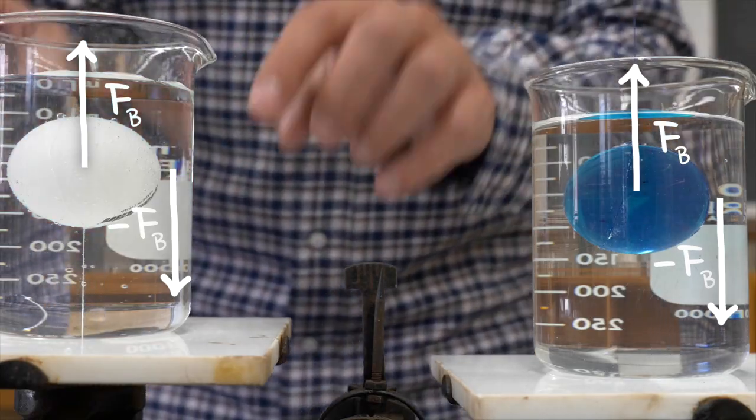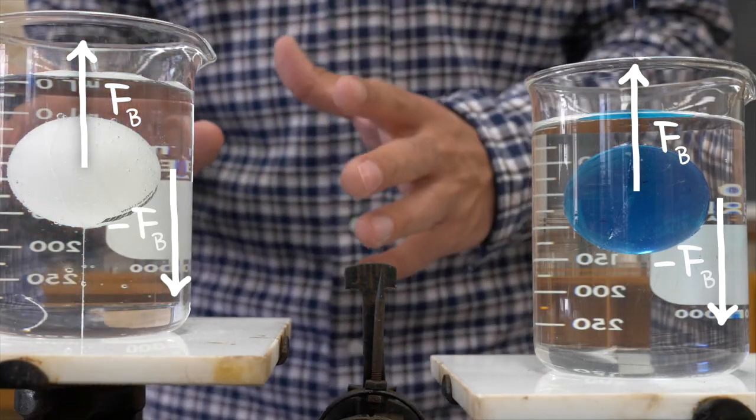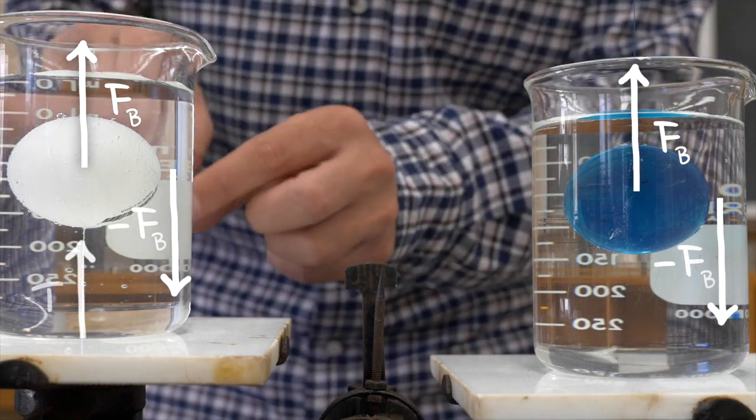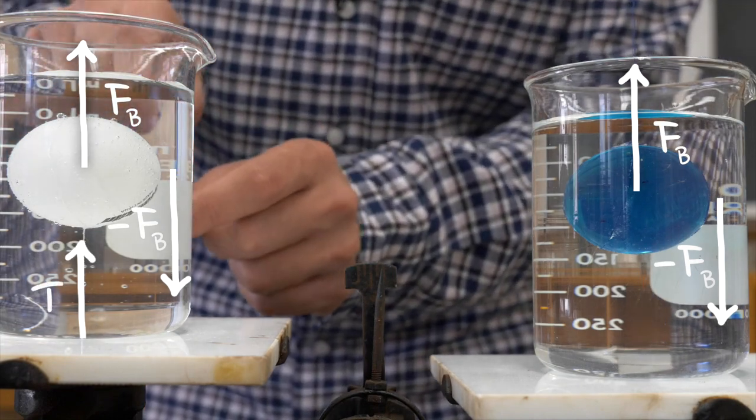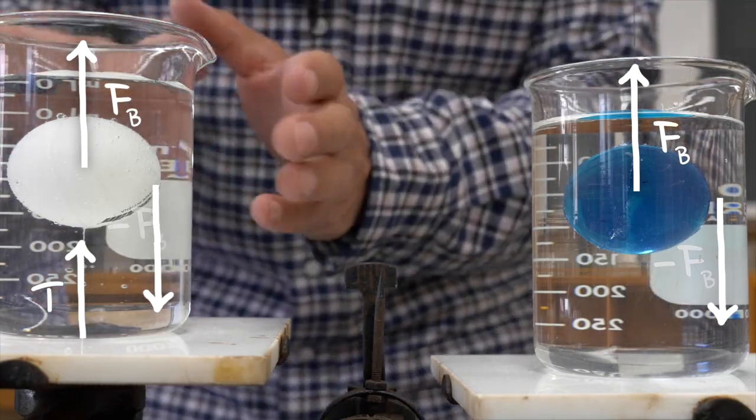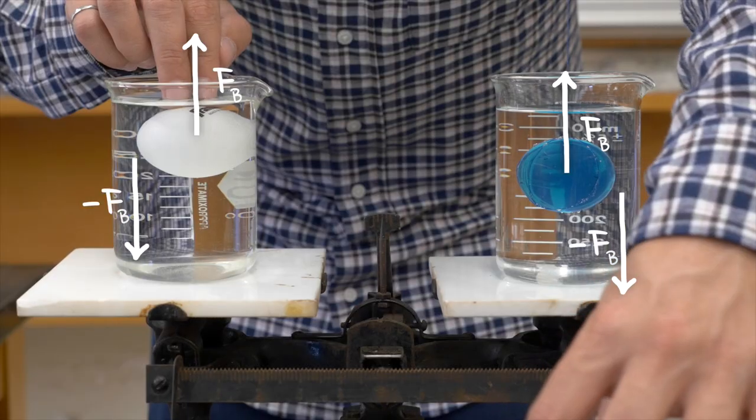But if you're wondering why this result is different from the previous case, consider that in the first part, the downward force on the ping pong ball side was counteracted by the upward tension in the string. But not anymore, because there is no string.